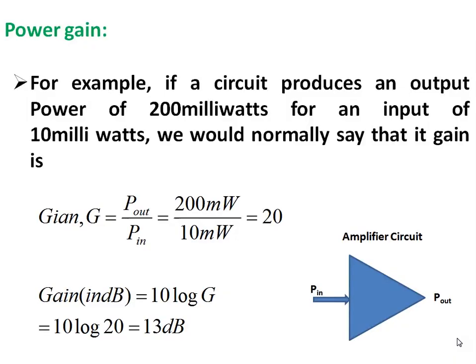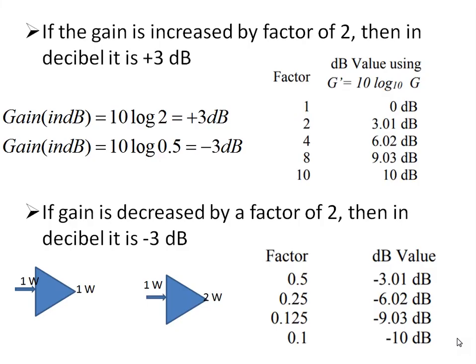The power gain can be understood by a simple example. We know gain equals output by input. In a circuit that produces output power of 200 milliwatts for an input of 10 milliwatts, the gain in decibels is calculated as 10 log of G, which gives around 13 dB.